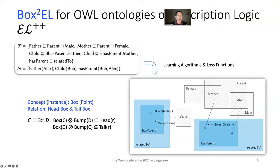In this paper, we propose box embeddings for OWL ontologies of Description Logic EL++. Each concept is represented by a box, and each instance is represented by a single vector. The relationships between concepts can be represented by box intersection and box inclusion. Each relation is represented by two boxes — one for the head and another for the tail.